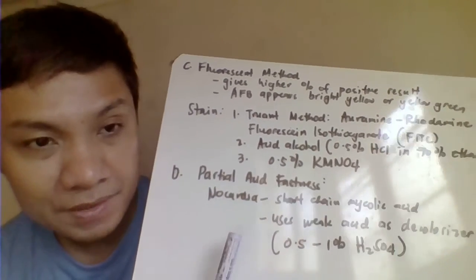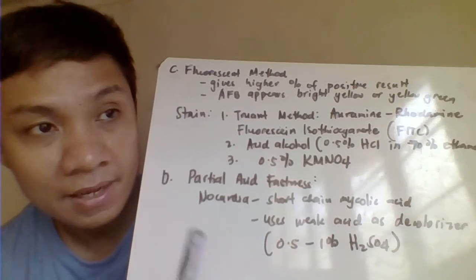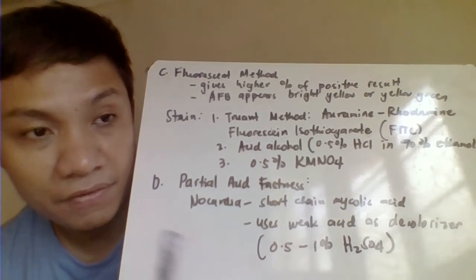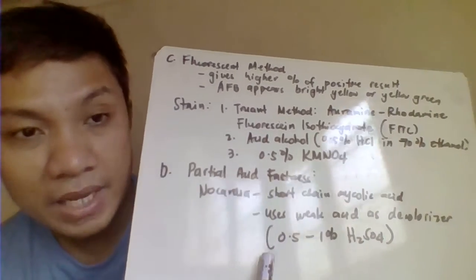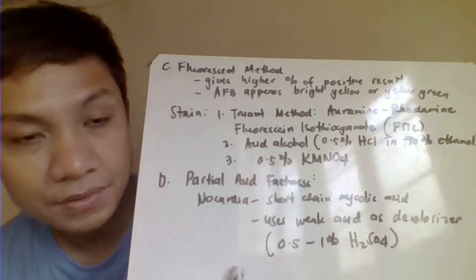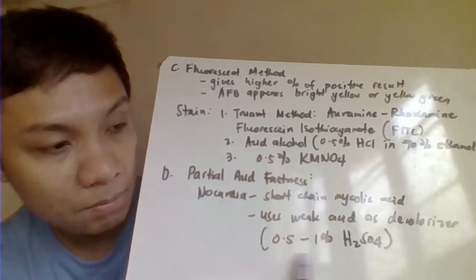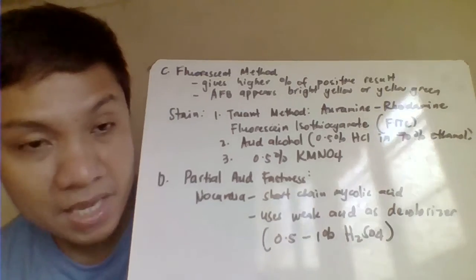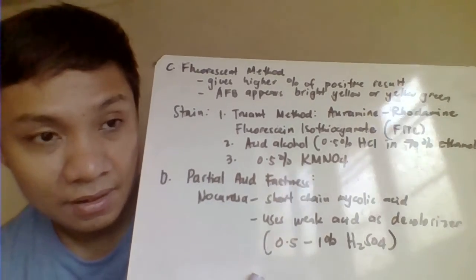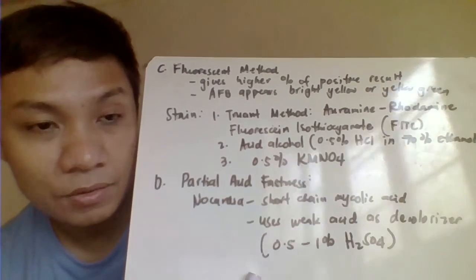This is 0.5-1% sulfuric acid. Okay, anong ibig sabihin nito, pag again, ganun pa rin, ang ating primary stain is your Carbolfuchsin. Kung ang ating decolorizer na ginamit is your weak acid, 0.5 to 1% sulfuric acid. Pag ito ginamit mo, kung yan ay Nocardia, they would not be decolorized.